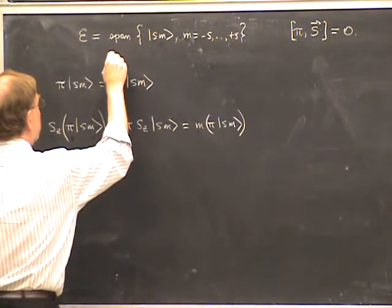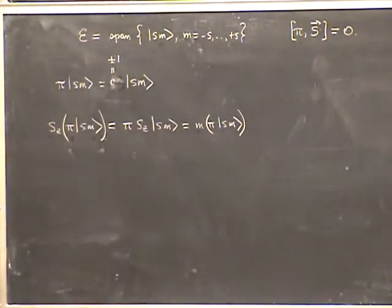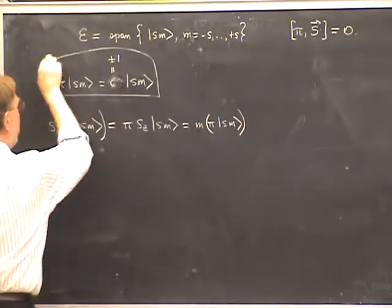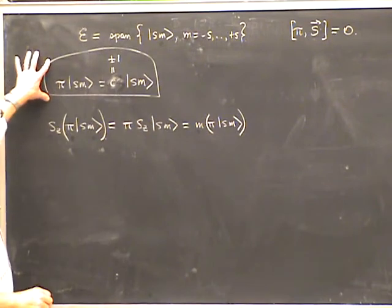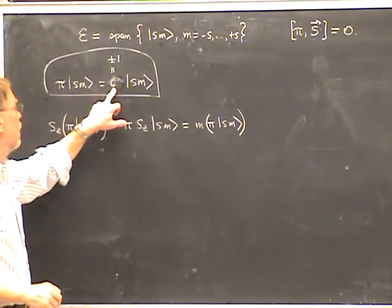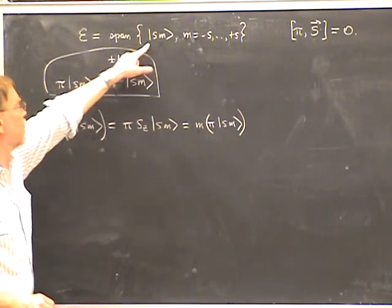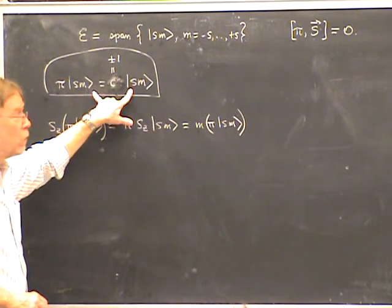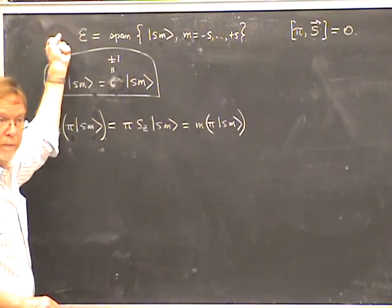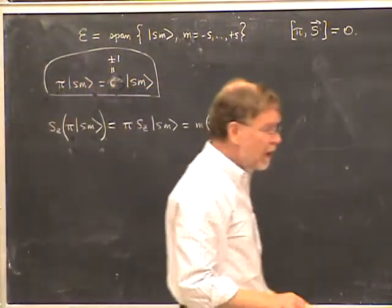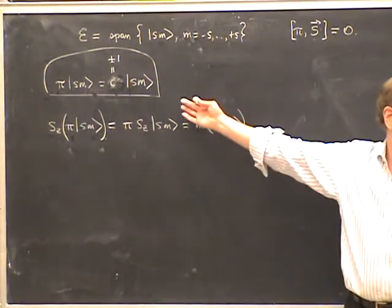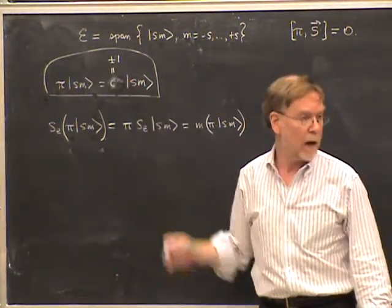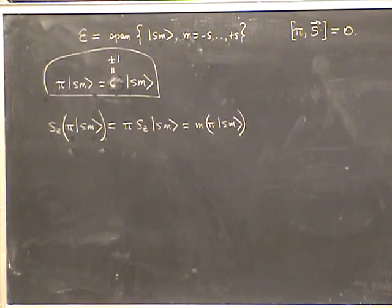Since pi-squared equals one, the eigenvalues must be plus or minus one. So this constant C equals plus or minus one. The next step of this argument is to show that these eigenvalues are actually independent of m — there is a single eigenvalue, plus or minus one, that applies to the entire spin space. This is exactly the same conclusion we made earlier when discussing Hamiltonians: energy eigenvalues are independent of the magnetic quantum number, because pi is a scalar operator.